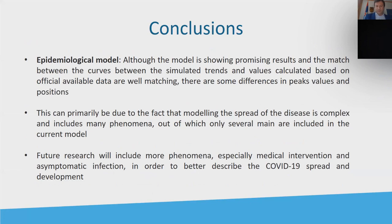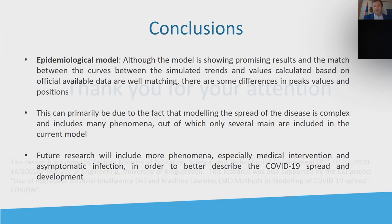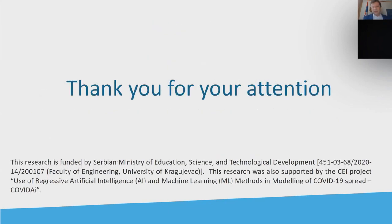For future research, we have to include for the epidemiological model more phenomena, especially medical intervention and asymptomatic infection, because the number of asymptomatic persons is much higher. In order to better describe the spread and development of COVID-19 and try to better understand this process, and to stop or reduce the number of infected people and number of deaths. That's all from my talk. Thank you very much for your attention. We got some European projects for this funding and also some national projects. Thank you very much.